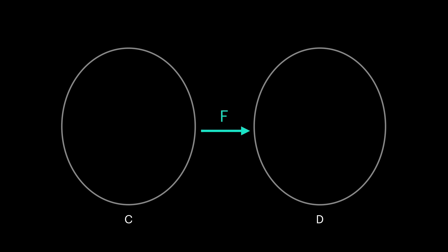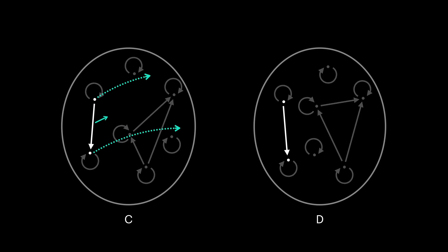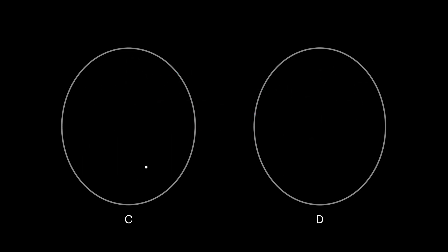We learned that functors are simply mappings between categories. We also learned that categories consist of objects and arrows. We can think of objects as types and arrows as functions. Functor maps each object and each arrow from the first category to the second one.